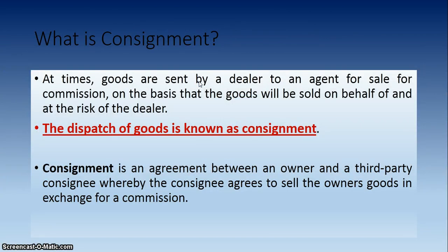So, what is Consignment? At times, goods are sent by the dealer to an agent for sale on commission, on the basis that the goods will be sold on behalf of and at the risk of the dealer. This means whenever the owner of the goods sends goods to a third party for selling to customers, such an agreement is known as Consignment.